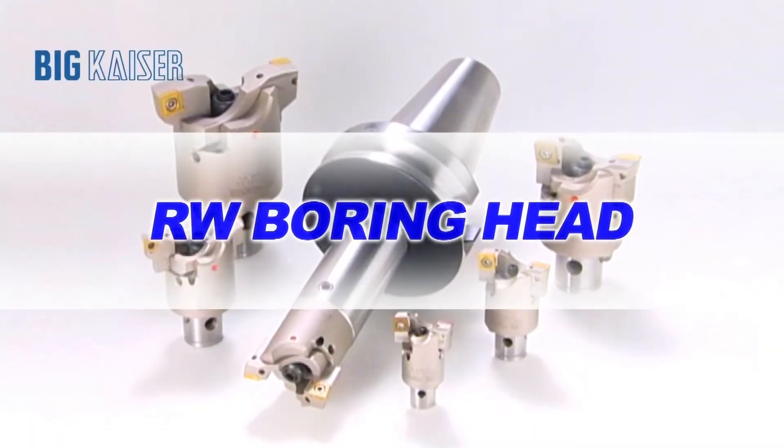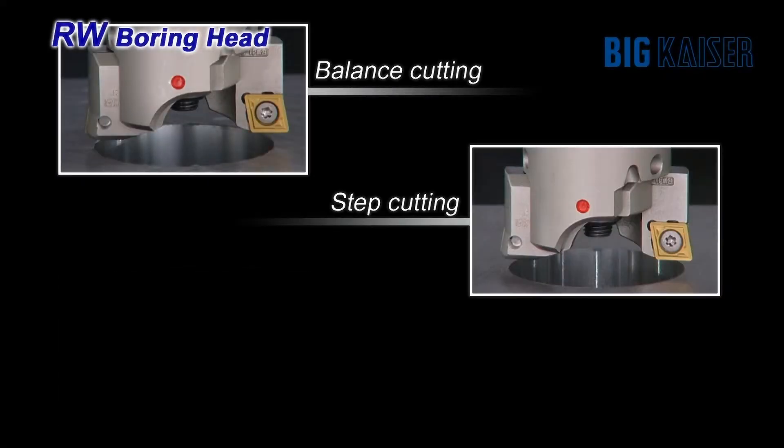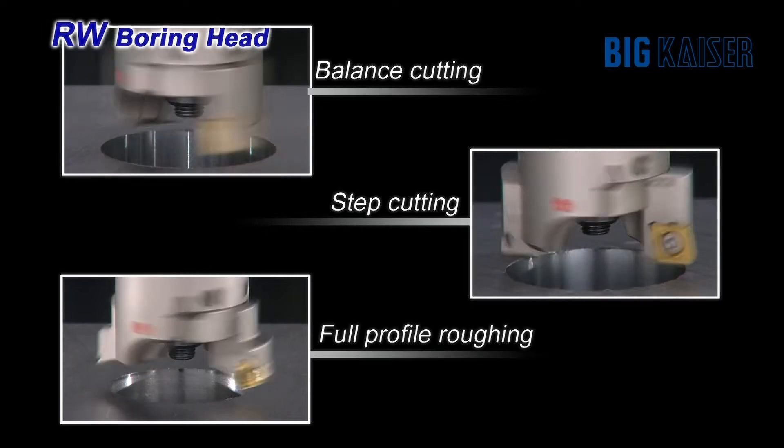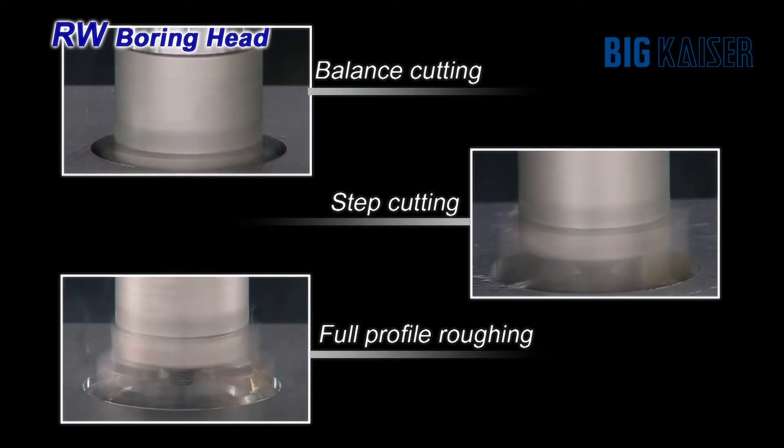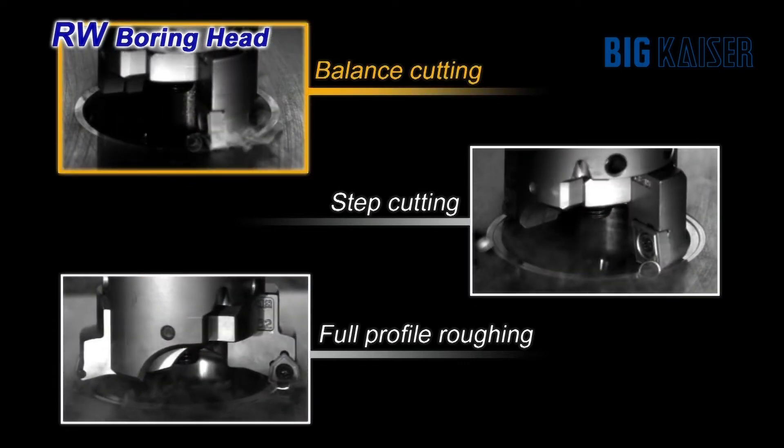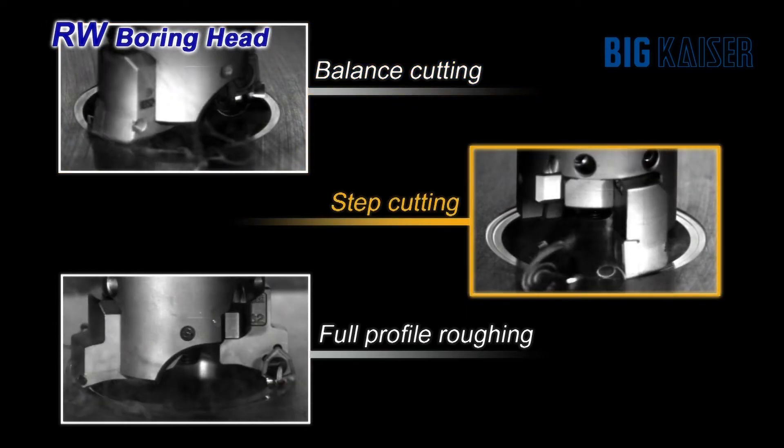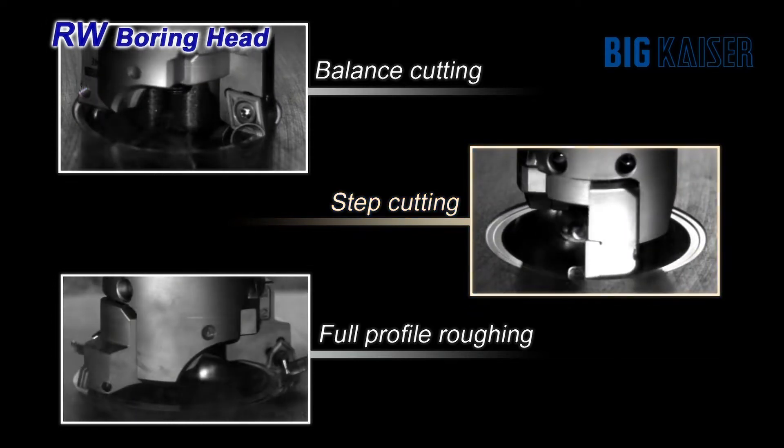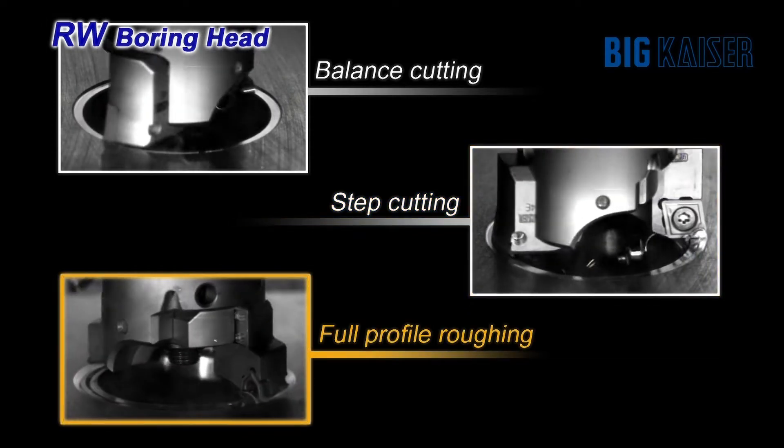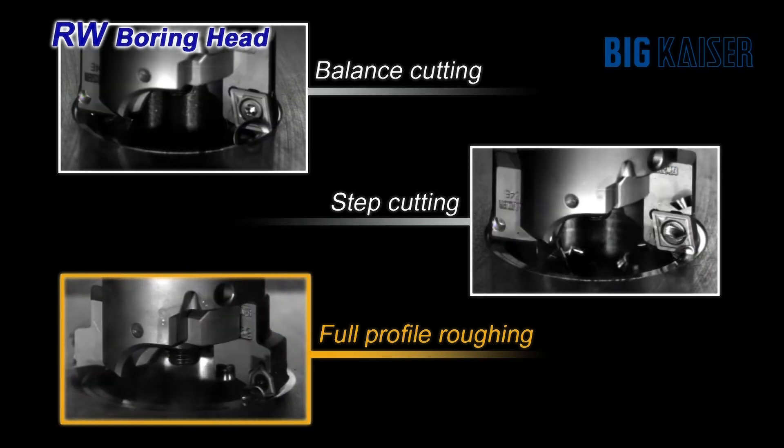The RW series of rough boring heads offer a variety of different cutting configurations. With built-in axial adjustment in the insert holders, balanced cutting can be optimized for cutting speed and surface finish. Axial adjustment also allows for step cutting with CCMT insert holders, which increases the depth of cut capability. Trigon insert holders are also available and can be staggered for full profile roughing, which allows maximum material removal.